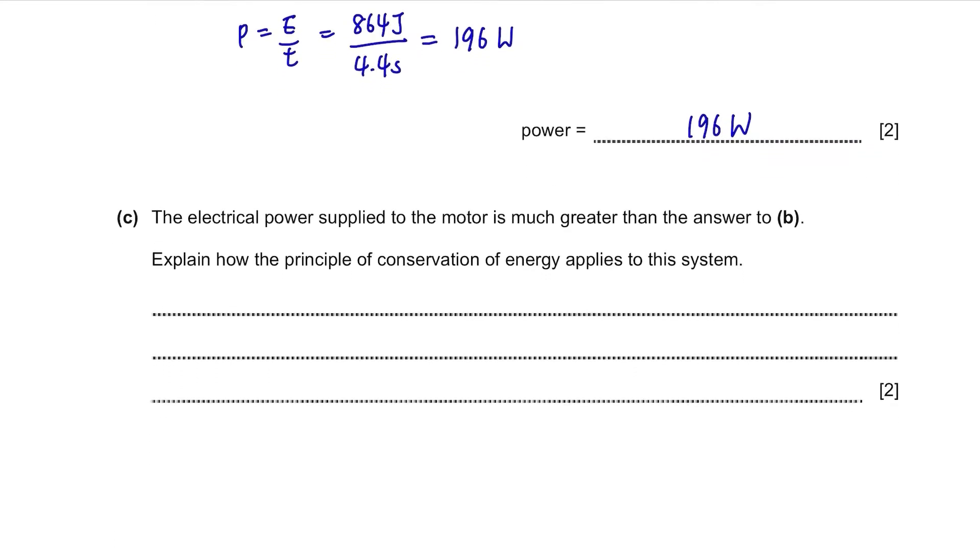Part C. The electric power supply to motor is much greater than the answer to part B. Explain how the principle of conservation of energy applies to this system. The power supply needs to be bigger than the calculated value because some energy will be dissipated into the surroundings as thermal energy due to friction. If we were to make connection with the conservation of energy, we need to include that the initial energy equals to the final energy so energy is not lost but some are converted to heat in the process.